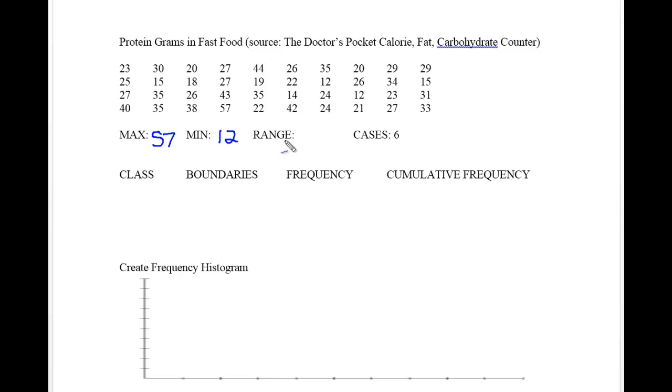The range would be max minus min. So to find range, we take our max and subtract the minimum, giving you the answer of 45. What's important about the range is to figure out your width or spacing in your classes by the number of cases. Range divided by cases gives me 45 divided by 6, which is approximately 8.